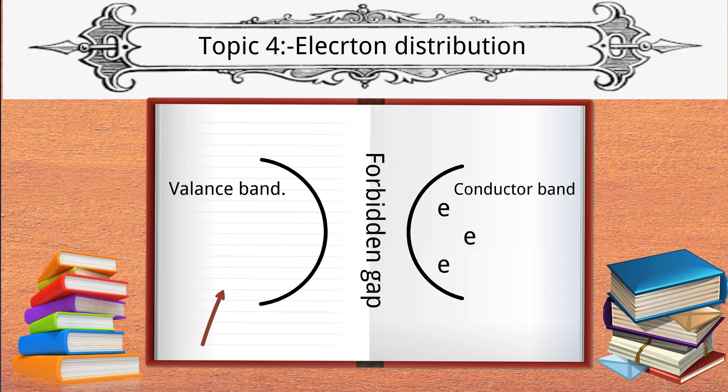Also keep in mind that in insulators, the forbidden gap is long, and thus electrons cannot jump from valence band to conduction band; thus they cannot conduct current. In conductors, the valence band and conduction band overlap each other, and thus electrons can easily jump from valence band to conduction band; thus they can conduct current easily. Talking about semiconductors, the gap is small, so electrons can jump but they require a specific amount of energy.